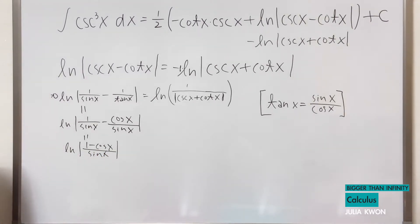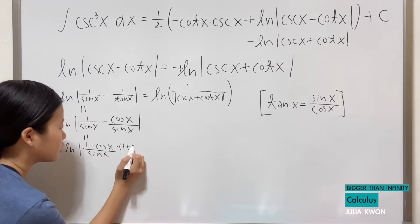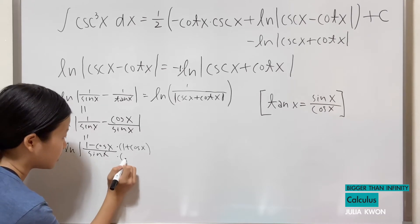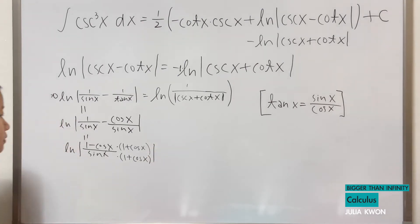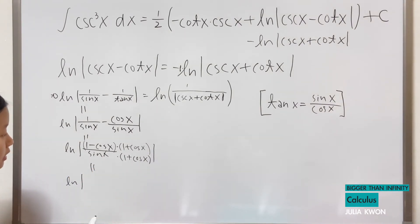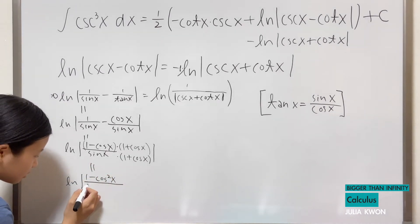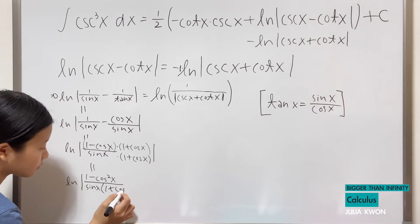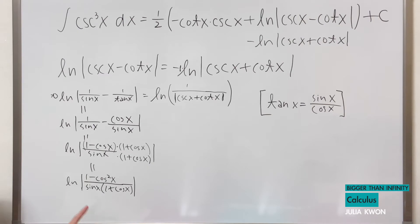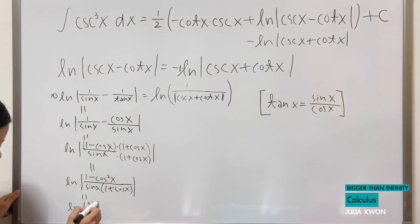From here, we're going to multiply the top and bottom of this fraction by 1 plus cosine x. So 1 minus cosine x multiplied by 1 plus cosine x gives us 1 minus cosine squared x, divided by sine x times 1 plus cosine x. By the Pythagorean trigonometric identity, 1 minus cosine squared x equals sine squared x, so we have ln of the absolute value of sine squared x divided by sine x times 1 plus cosine x.